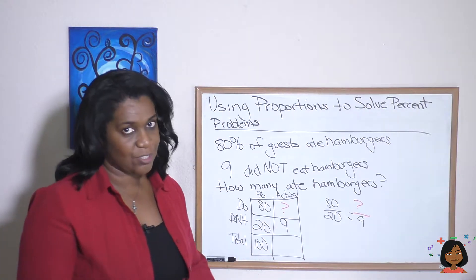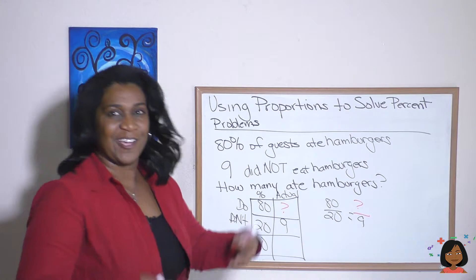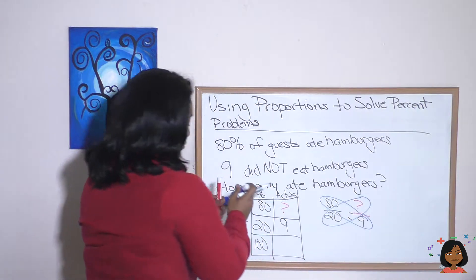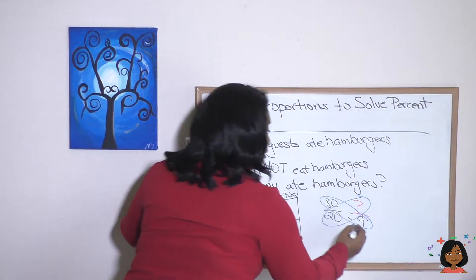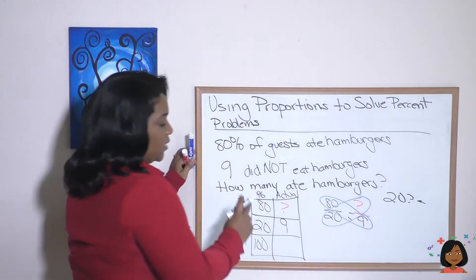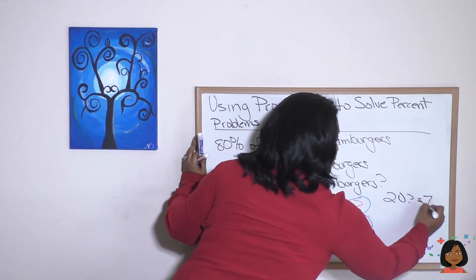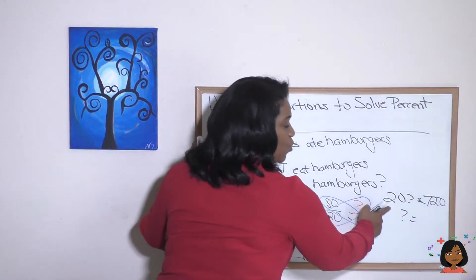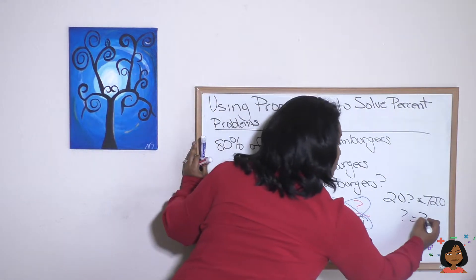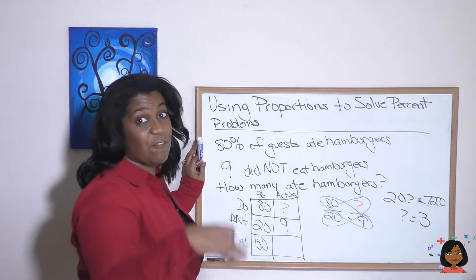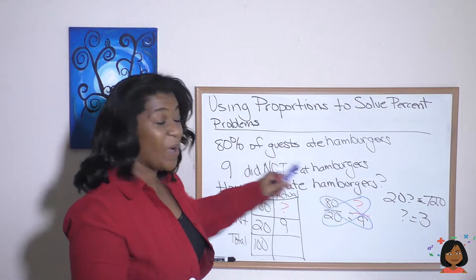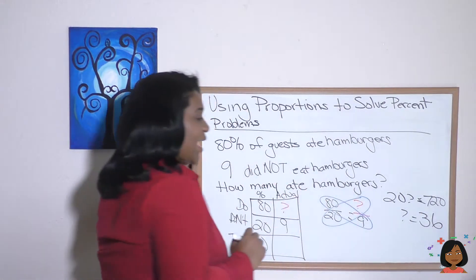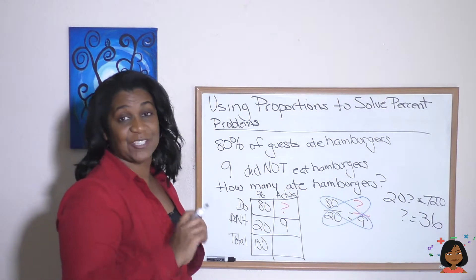To find the answer to a missing number in a proportion, we cross multiply. So 20 times question mark equals 80 times 9, which is 720. My question mark: 20 into 72 goes three times, 12 is left over. Bring down that zero — I have 120. 20 goes into 120 six times. That means 36 people actually ate hamburgers.